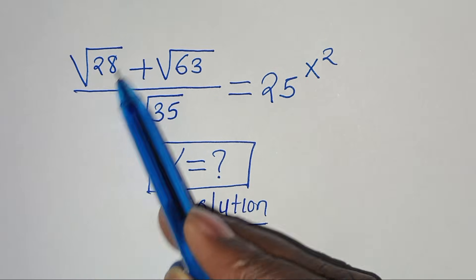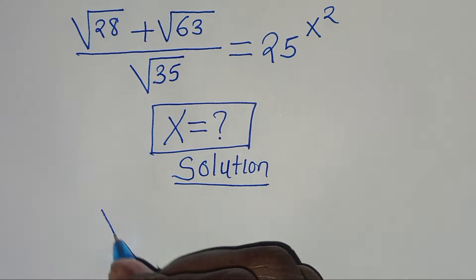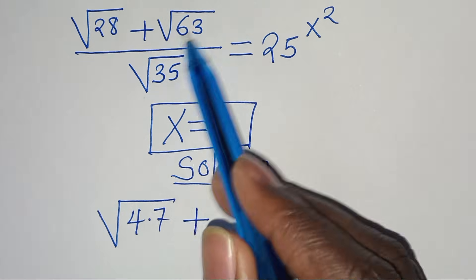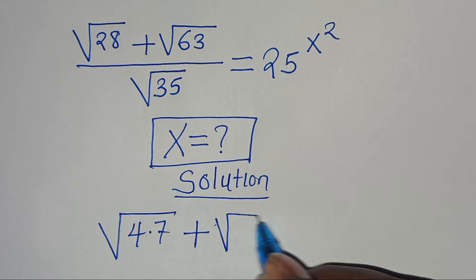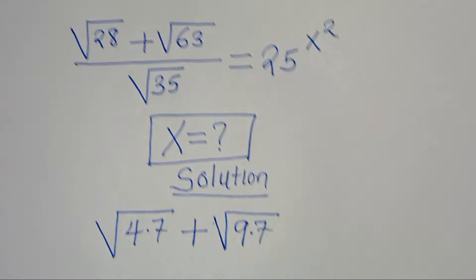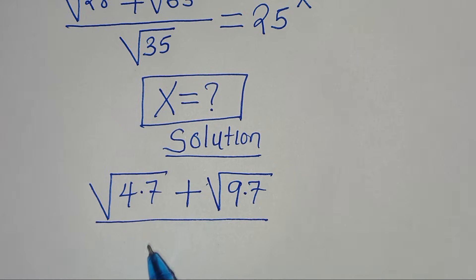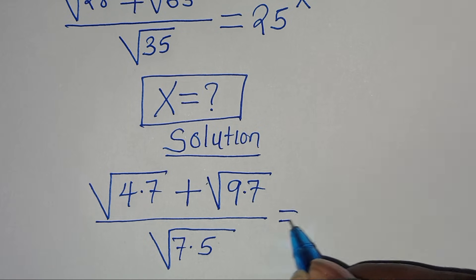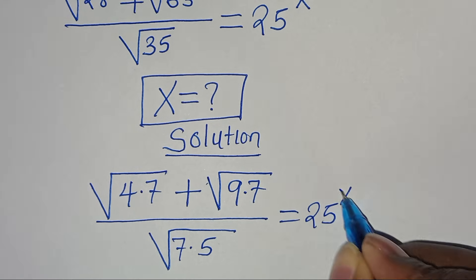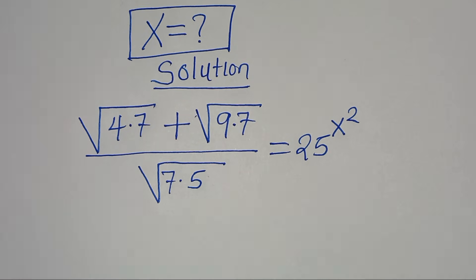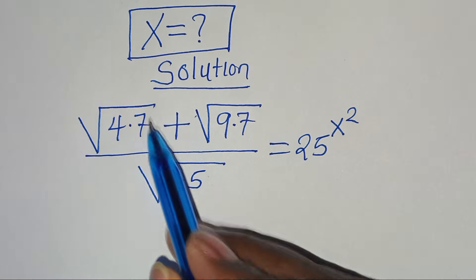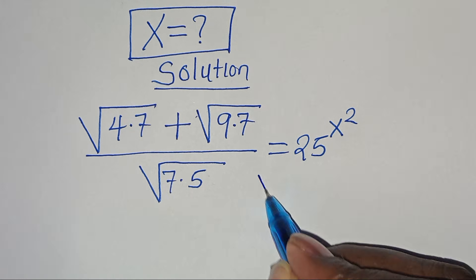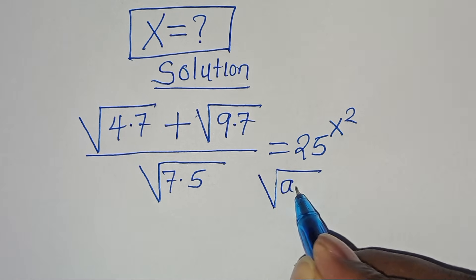Now we can express the square root of 28 as the square root of 4 multiplied by 7, then plus the square root of 63, which can be expressed as the square root of 9 multiplied by 7, divided by the square root of 35, which we can express as the square root of 7 times 5. This equals 25 to the power of x squared. The square root of 4 times 7, the square root of 9 times 7, and the square root of 7 times 5 are all in the form of square root of a multiplied by b.